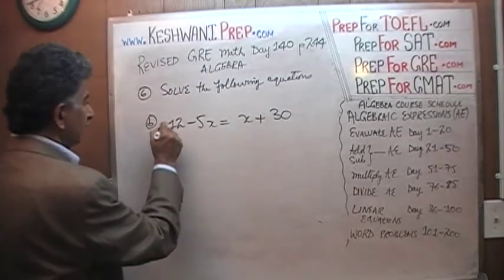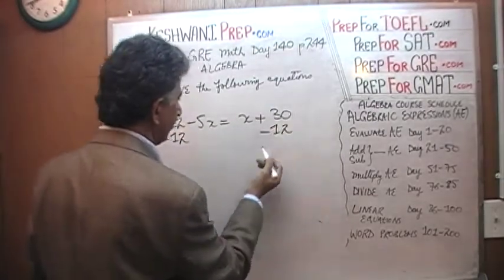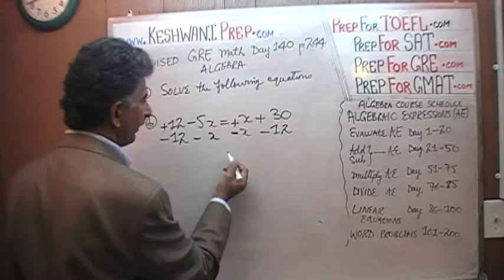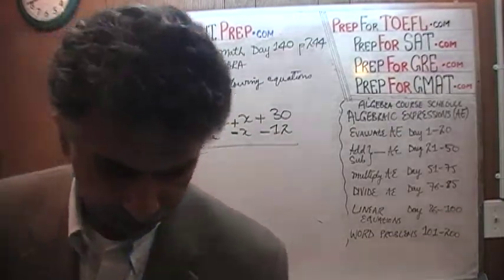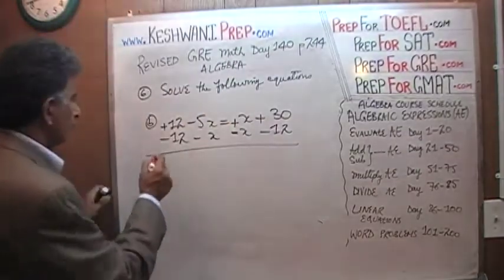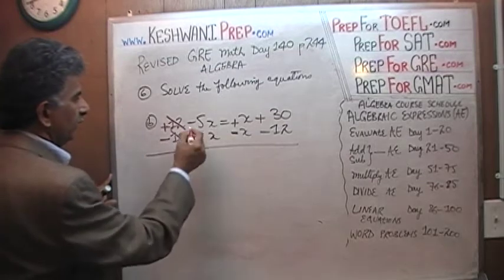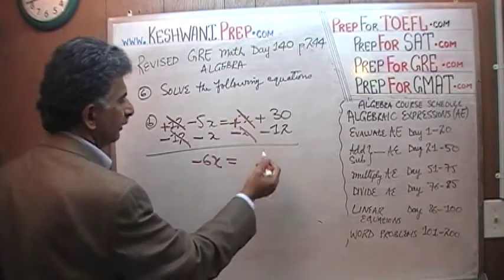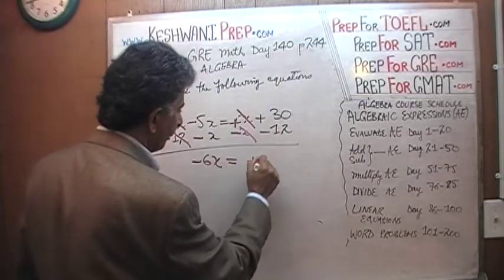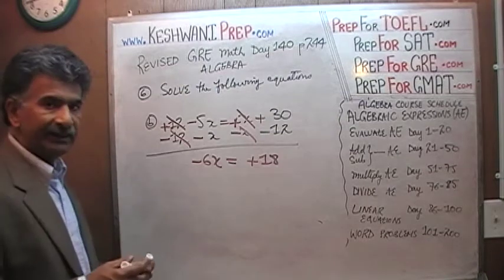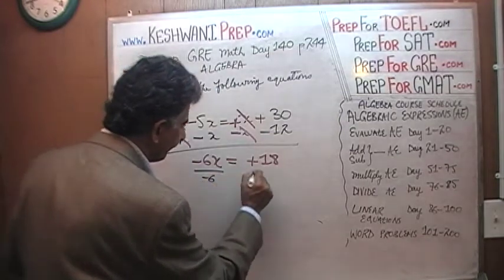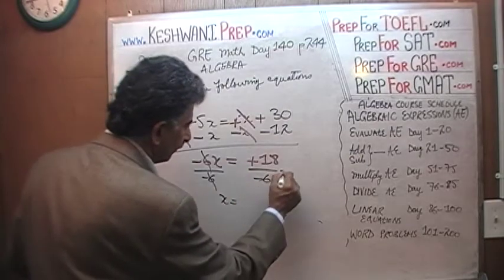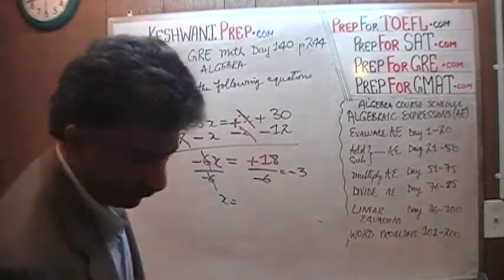How do I bring the 12 to the other side? By subtracting 12 from both sides. How do I bring the x to the other side? By subtracting x from both sides. A positive 12 and a negative 12 cancel each other out. A negative 5x and a negative x gives us negative 6x equals. A positive x and a negative x cancel each other out, and positive 30 and negative 12 gives us positive 18. Divide both sides by negative 6 — negative 6 cancels out, and x equals 18 divided by negative 6, which is negative 3.